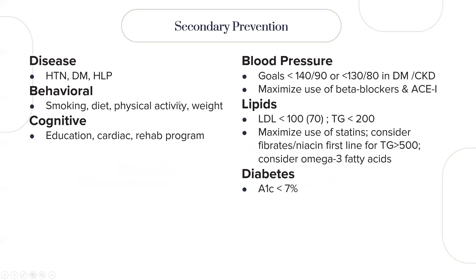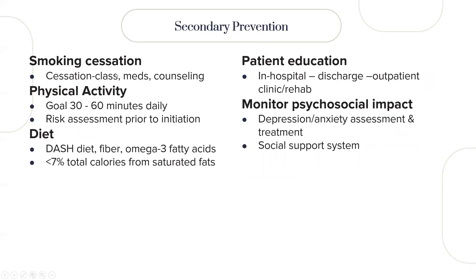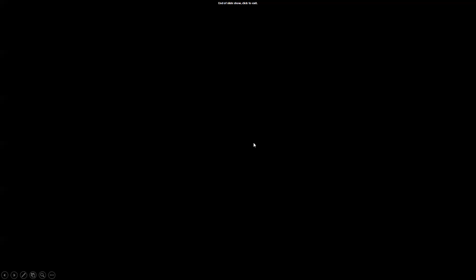For secondary prevention after MI, once the patient is stabilized and being discharged, they must control hypertension and diabetes, stop smoking, maintain a good diet, engage in physical activity, and join a rehabilitation program. Blood pressure should be lower than 140/90 mmHg, or lower than 130/80 if they have diabetes or chronic kidney disease. Monitor psychosocial impact as well.